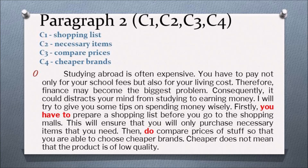Paragraph 2 covers C1 shopping list, C2 necessary items, C3 compare prices, and C4 cheaper brands. The paragraph reads: 'Studying abroad is often expensive. You have to pay not only for your school fees but also for your living cost. Therefore, finance may become the biggest problem. Consequently, it could distract your mind from studying to earning money. I will try to give you some tips on spending money wisely. Firstly, you have to prepare a shopping list before you go to the shopping malls. This will ensure that you will only purchase necessary items that you need. Then, do compare prices of stuff so that you are able to choose cheaper brands. Cheaper does not mean that the product is of low quality.'